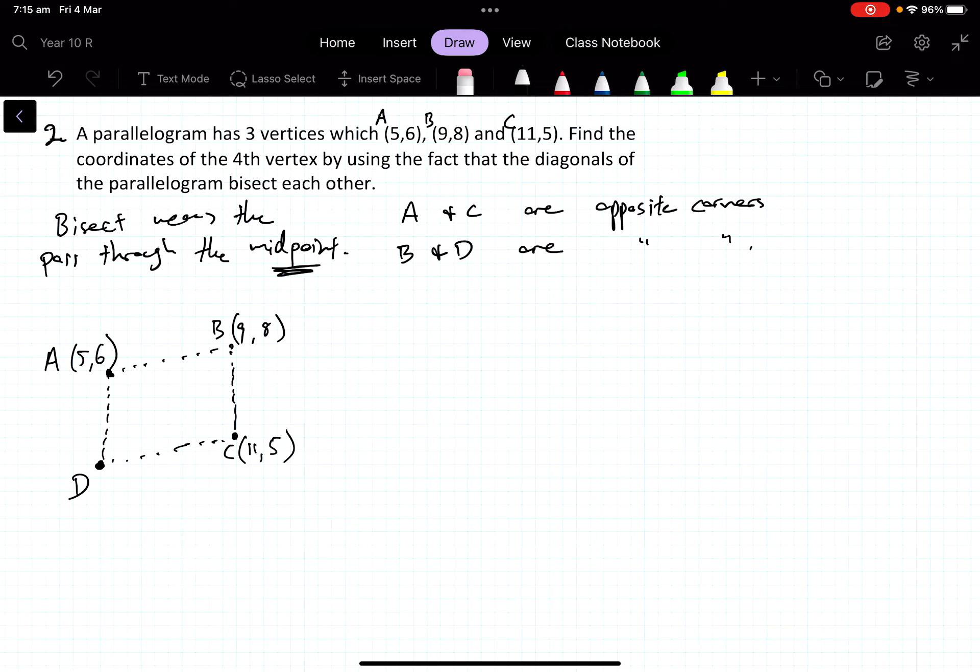And B and D are opposite corners. So D is the one we're trying to find (x, y). Now the clue that we're told—there are a few methods you could use—but the way that they're asking is using the fact that the diagonals bisect each other.